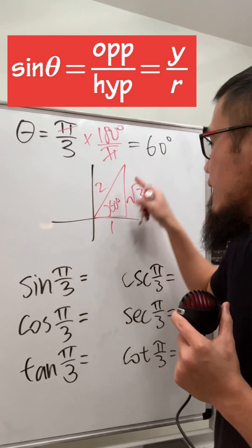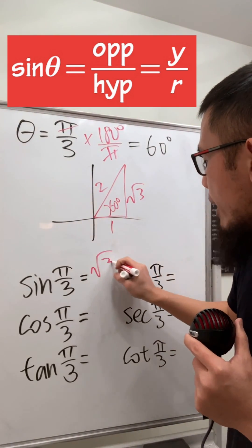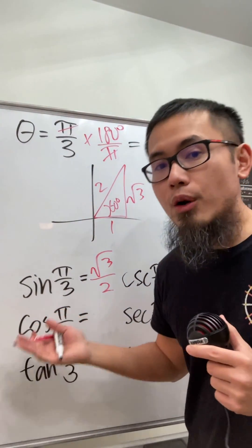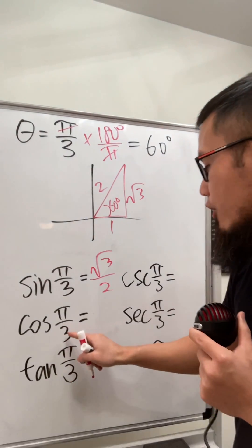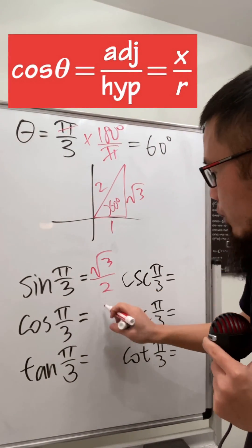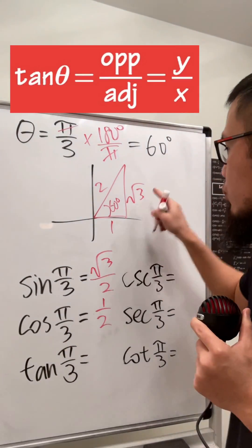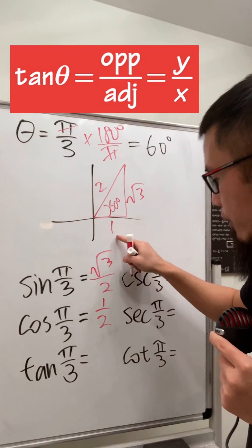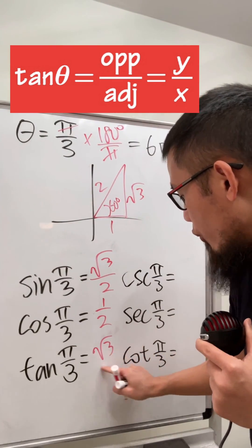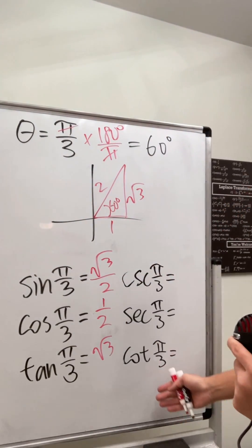We can look at sine as y over r — it's better for future questions. Cosine of π/3 is x over r, which is one half. Then tangent is y over x, which is square root of 3 over 1.